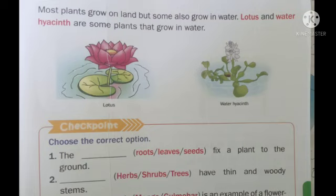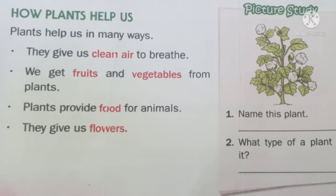Most plants grow on land, but some also grow in water. Lotus and water hyacinth are some plants that grow in water. Zyaada tar jo pode hote hain woh zameen pe agte hain, lekin kuch aise bhi plants hain jo paani mein bhi grow karte hain, jaise lotus aur water hyacinth.